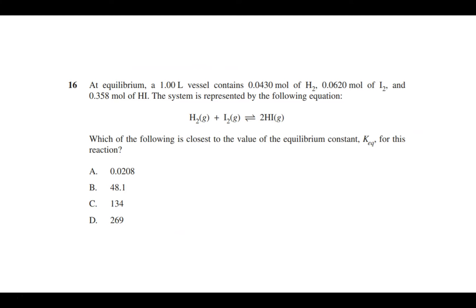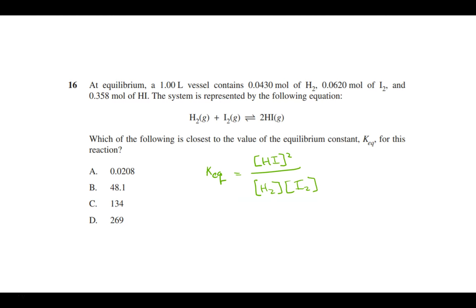Question 16: a 1.00-liter vessel contains 0.043 moles of hydrogen, 0.0620 moles of iodine, and 0.0358 moles of hydrogen iodide. Because it's a one-liter vessel, these values convert directly to molar concentrations. Using the equilibrium expression — products over reactants — plug in the numbers and divide. The closest value to the equilibrium constant for this reaction is 48.1.